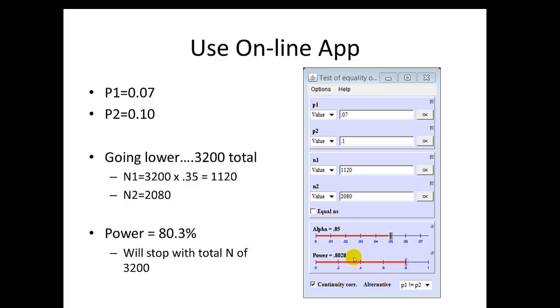I did this a number of times and finally got down to an estimate of 3,200. 3,200 times 0.35 is 1,120. That's N1. The difference is 2,080. That's N2. That yields a power estimate of 0.8028. That's close enough to 80% and I'll just stop there.